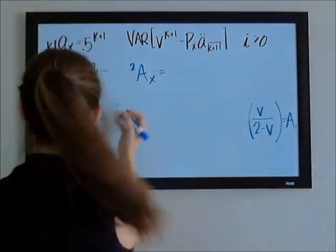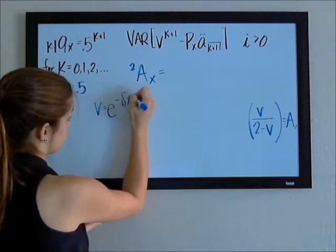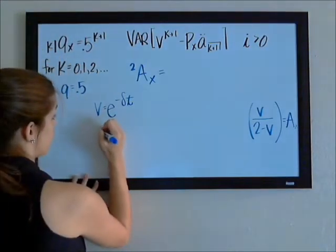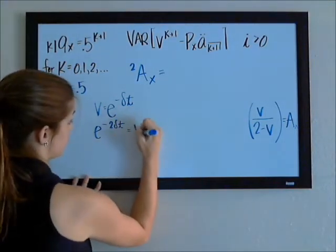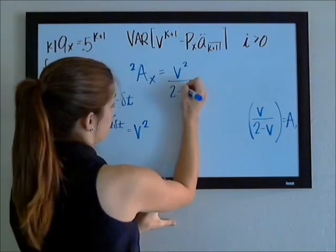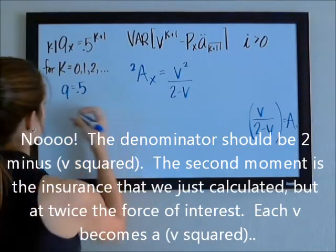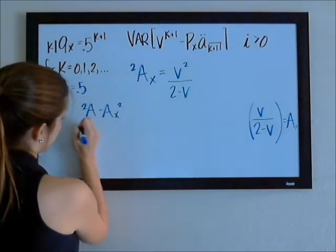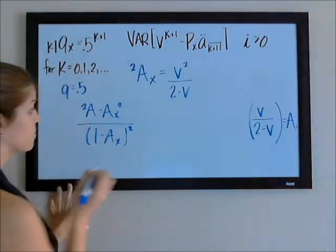So V is E to the negative force of interest times T, which is whatever time that you're at. So if we want to calculate at twice the force of interest, that's the same thing as V squared. So our second moment is just going to be V squared over 2 minus V. And you'll remember that we said our variance was going to be the second moment minus the actuarial present value of the insurance squared over 1 minus the insurance quantity squared.